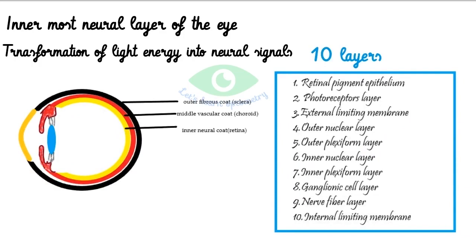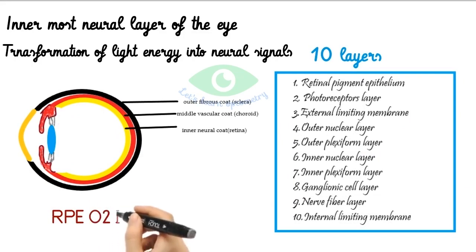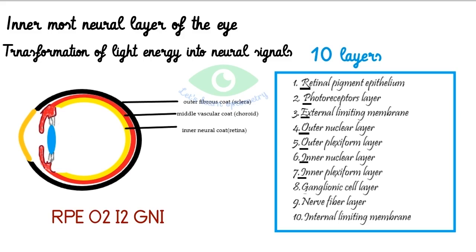I personally remember the order by the mnemonic RPE O-square I-square and GNI. R for retinal pigment epithelium, P for photoreceptors layer, E for external limiting membrane. Then O-square: one O is for outer nuclear layer and the other O is for outer plexiform layer. Since N comes before P in the alphabet, nuclear layer comes before plexiform layer. Then I-square: inner nuclear and inner plexiform layer. G for ganglion cell layer, N for nerve fiber layer, and I for internal limiting membrane.